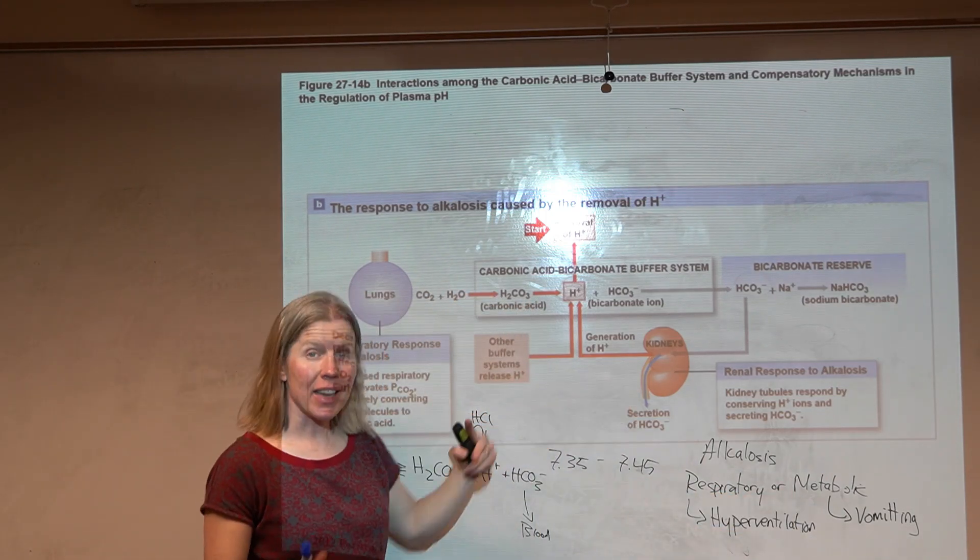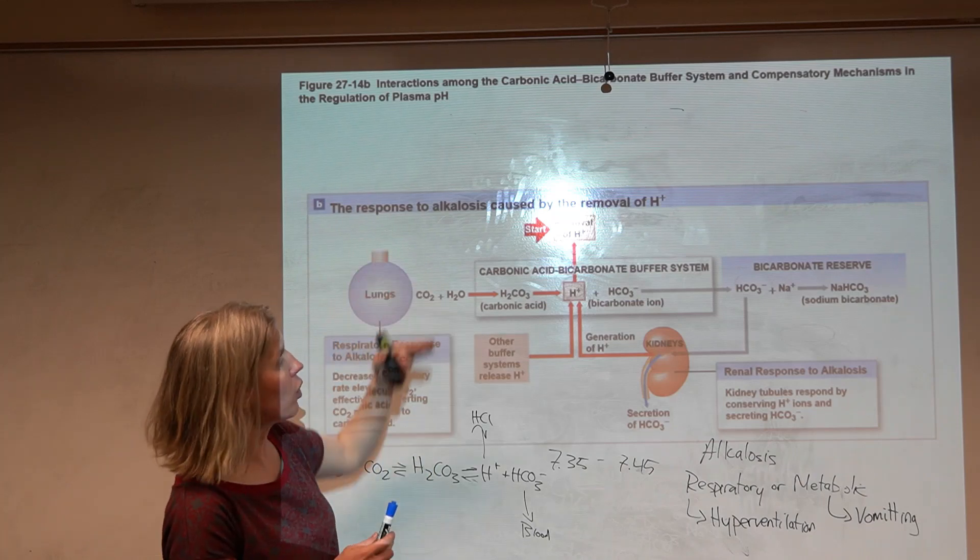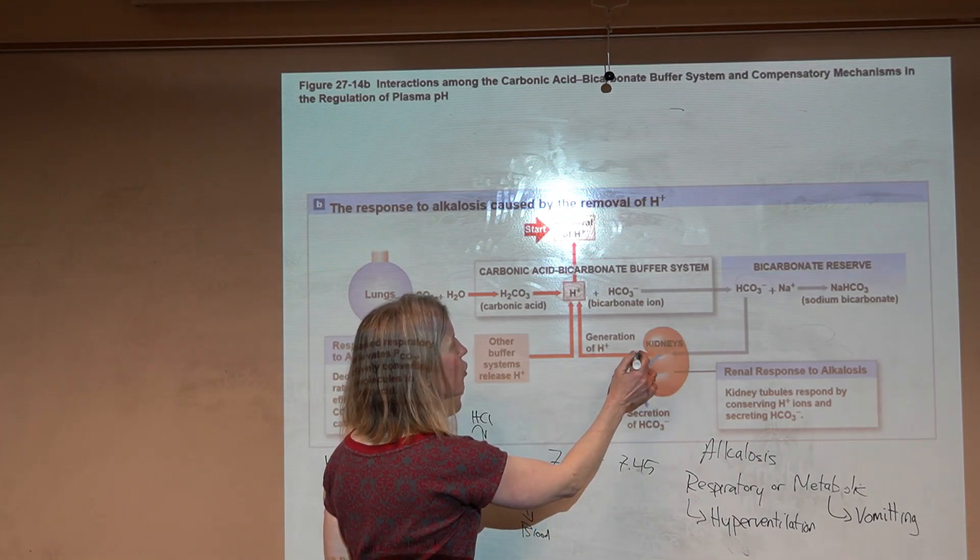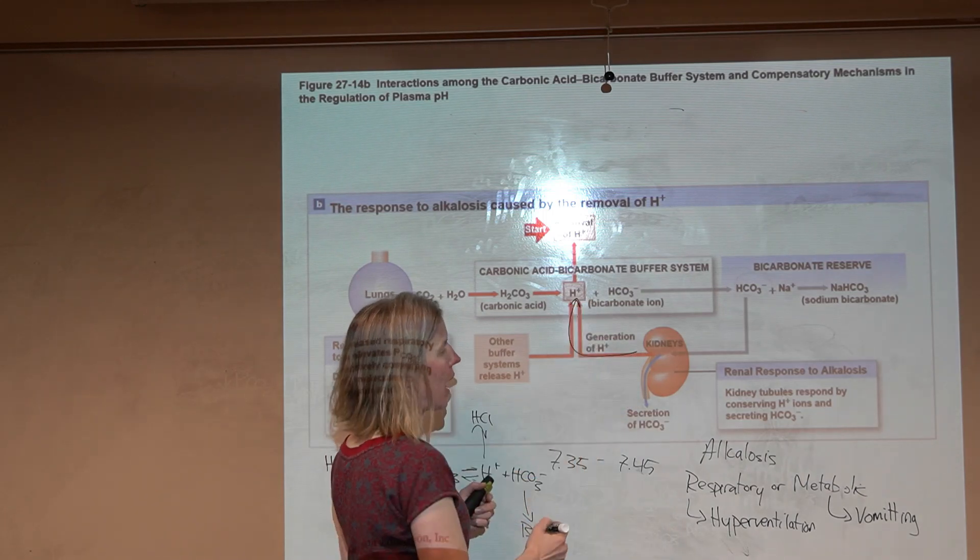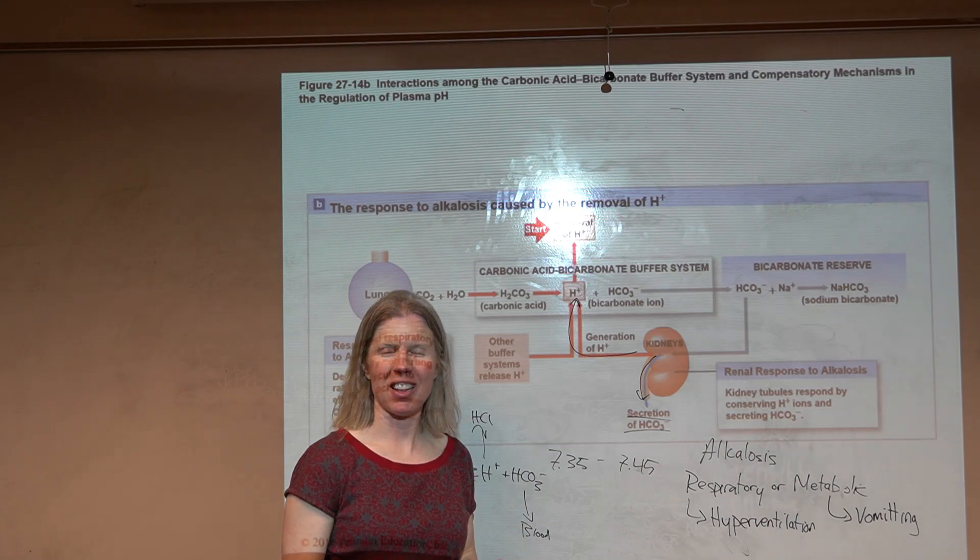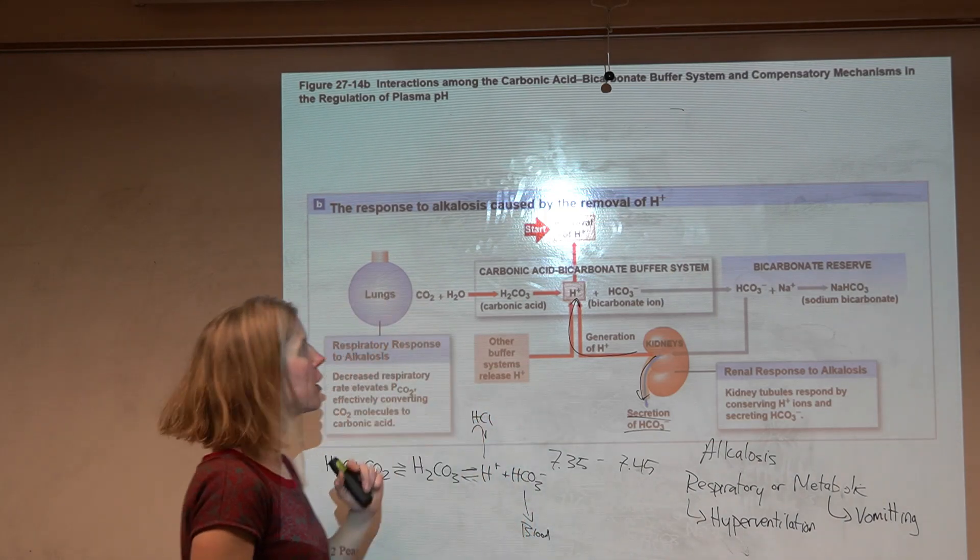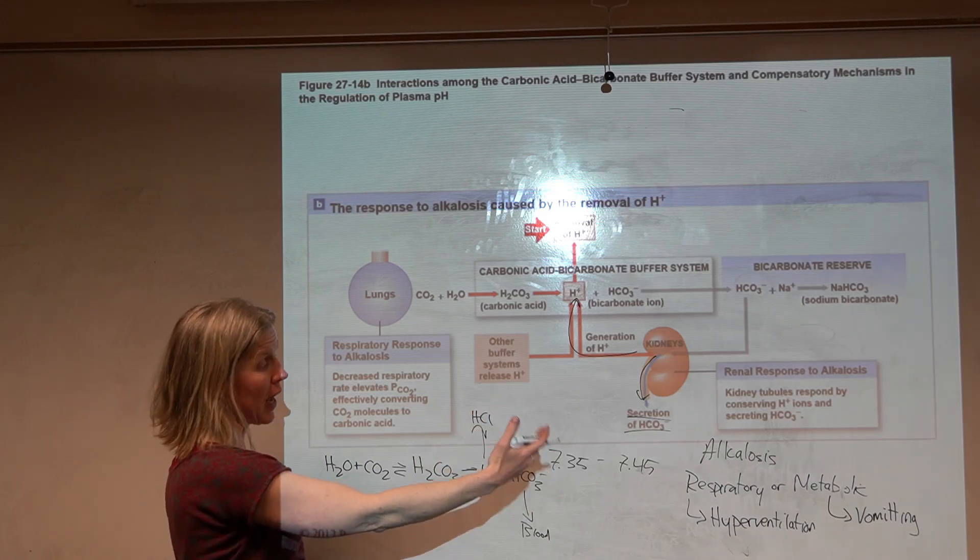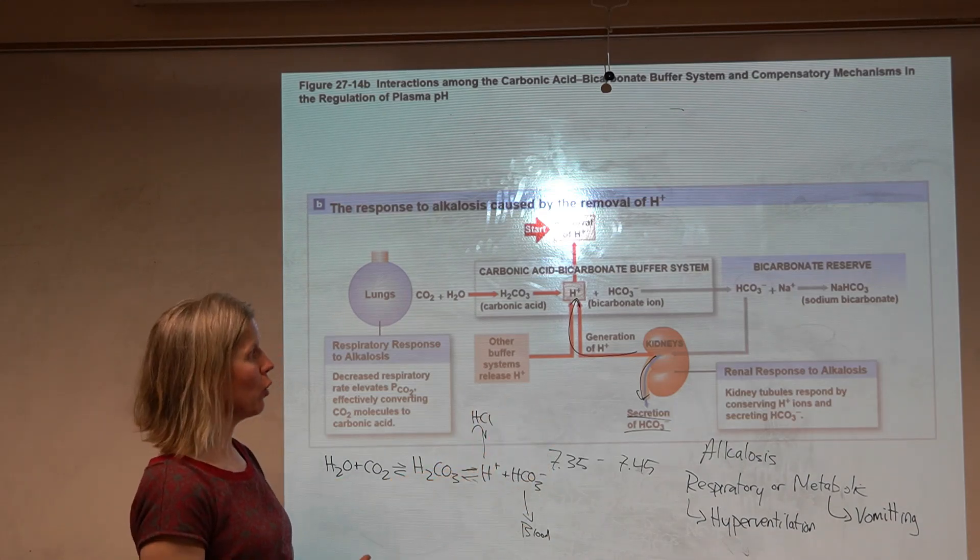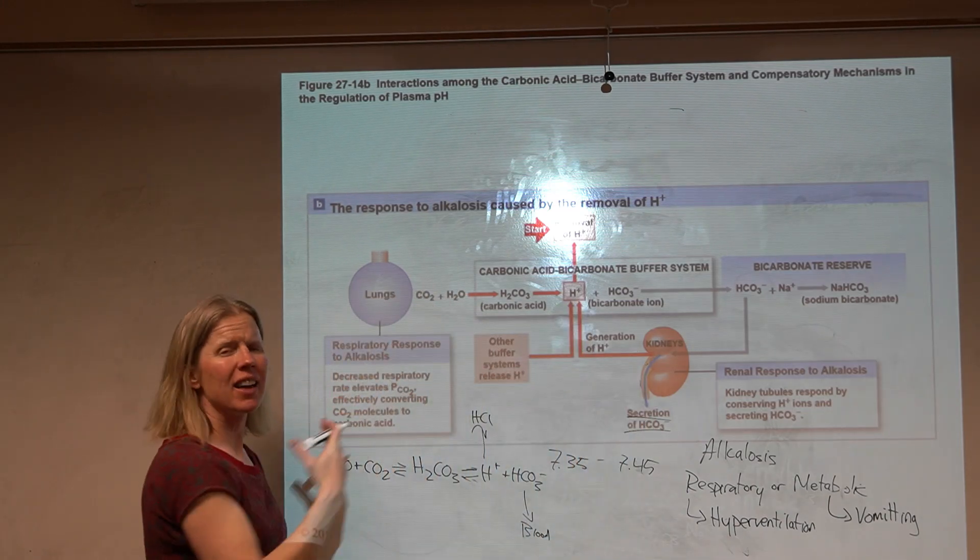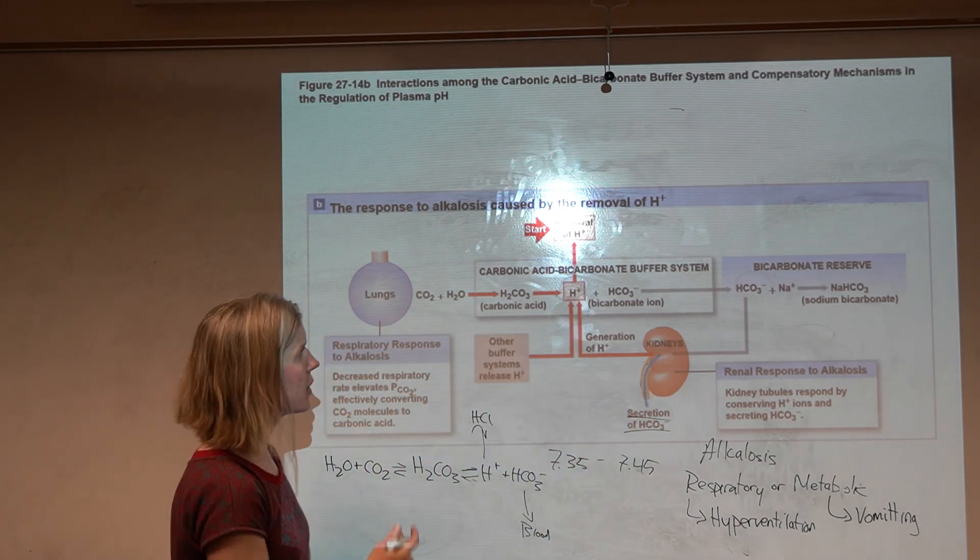The kidney in a period of alkalosis, the renal compensation is now to reabsorb that hydrogen and secrete bicarbonate. Go kidney! Bring the pH back down by providing that hydrogen. In something like a metabolic alkalosis, we'll see both the kidney and the lung working. The lung is faster, much more efficient at this.